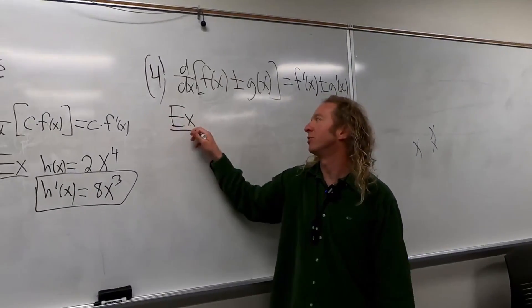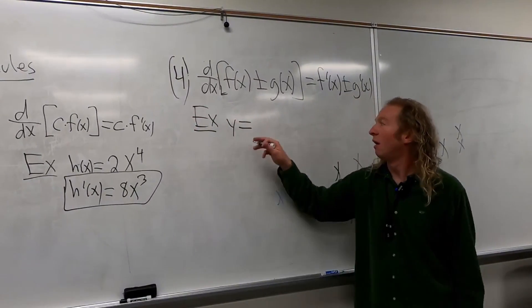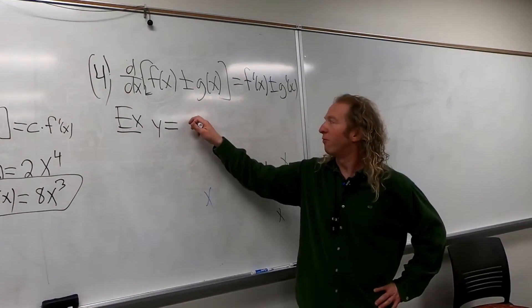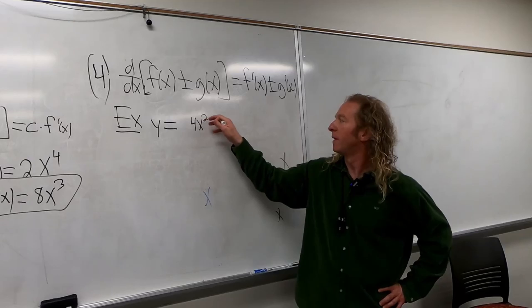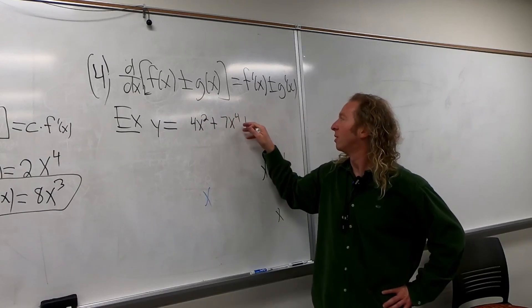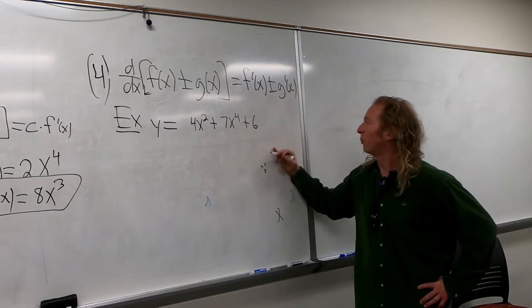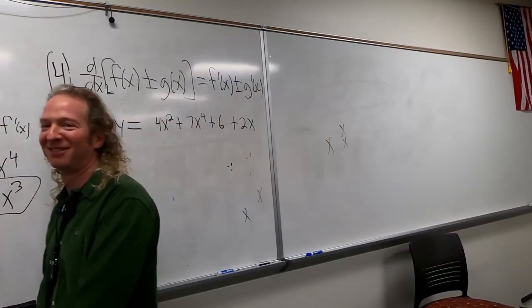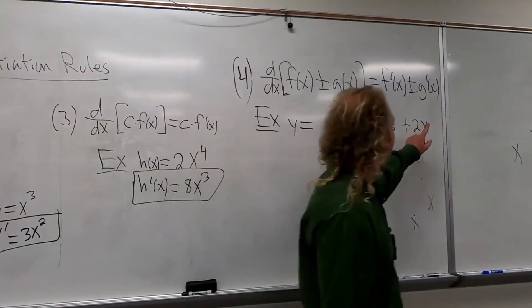The x means example, so let's say y equals, oh I know, let's do three pieces, let's go nuts. So 4x squared plus 7x to the fourth plus 6, oh one more, plus 2x. We haven't done stuff like this yet.